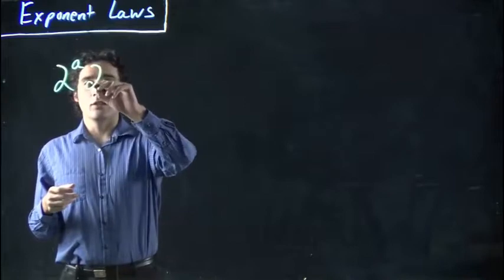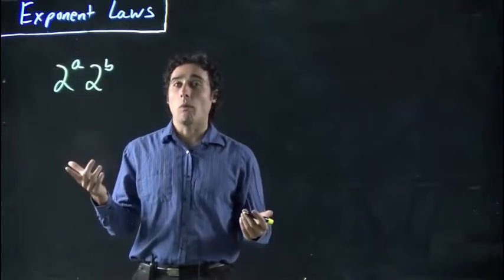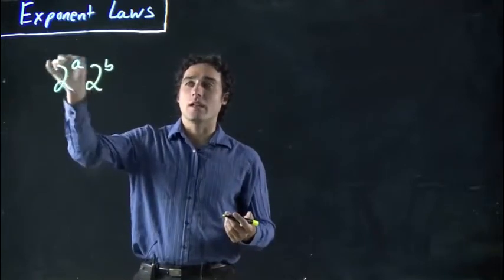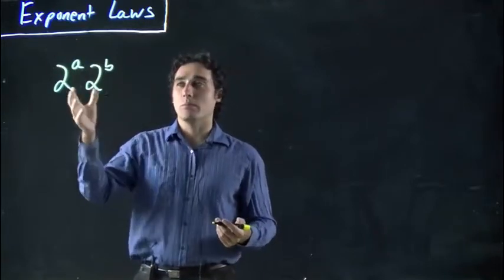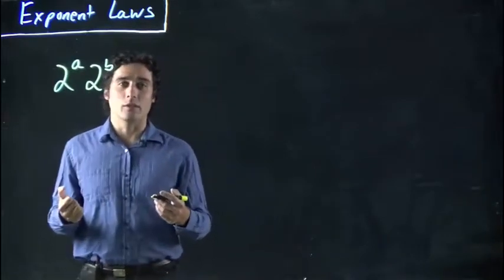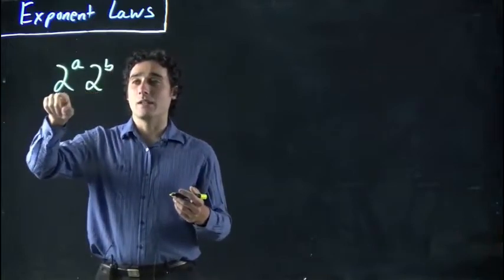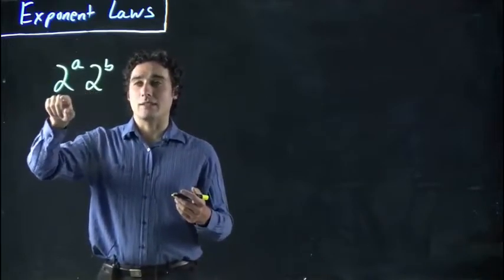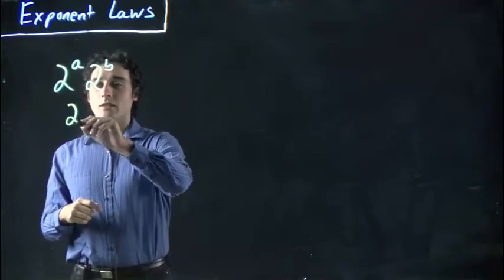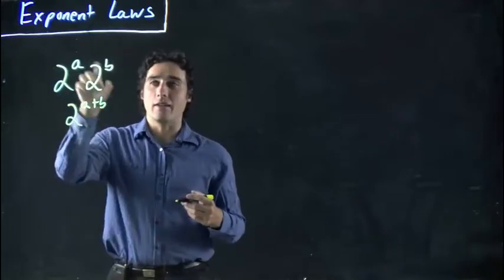But what happens when I have another one right beside it? 2 to the b. How do we combine these? I mean I could separately do each and then multiply them together. But in this case I don't know what a or b is. How can I write this as one number? Well when you have this, as long as they're to the same number here, the same base, then what we get is simply 2 to the a plus b. You add them.